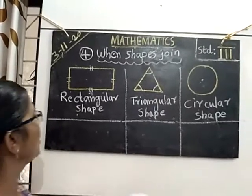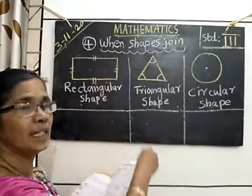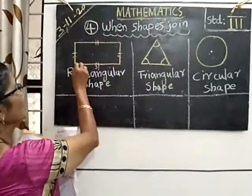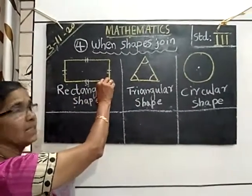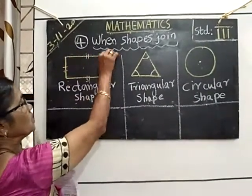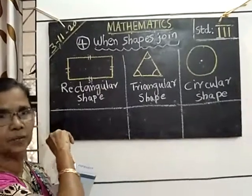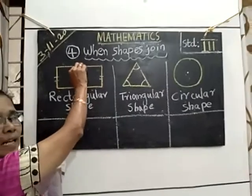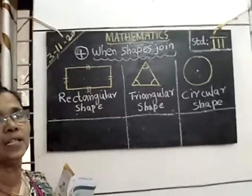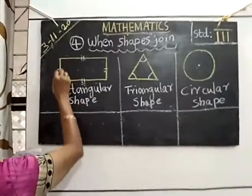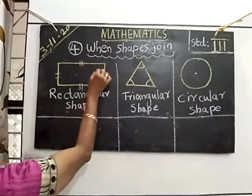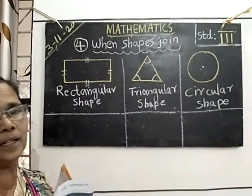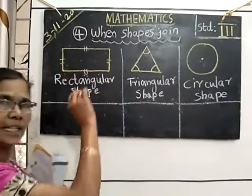Then, how to draw a rectangle. The rectangle's opposite sides are equal. So if it is 5 cm length here, here also it must be 5 cm. If it is 10 cm here, on top the line must be 10 cm. This side, if it is 3 cm, this side also must be 3 cm — equal length. Opposite sides are equal.